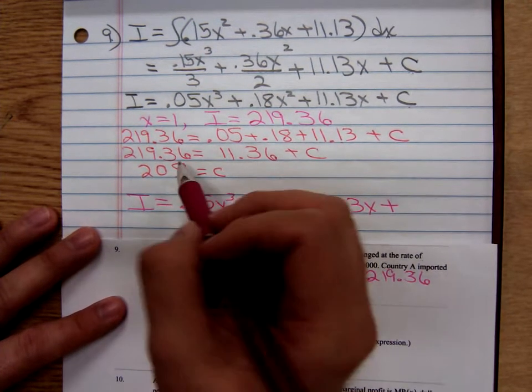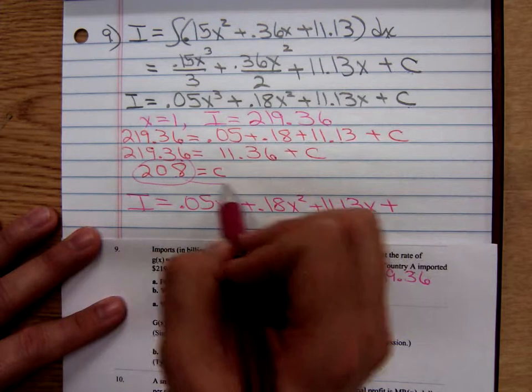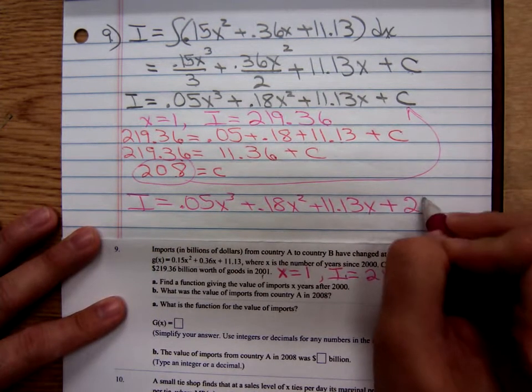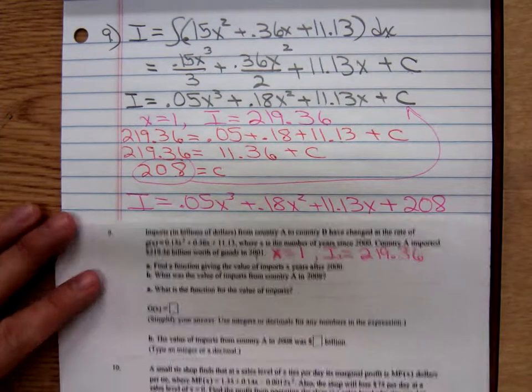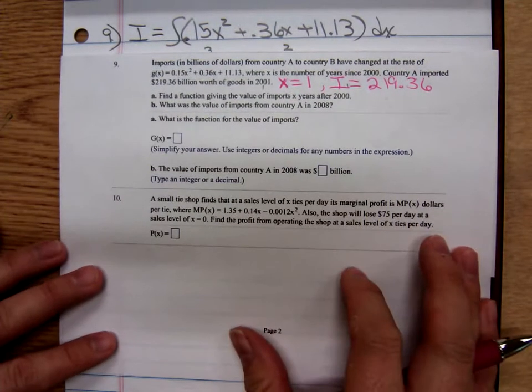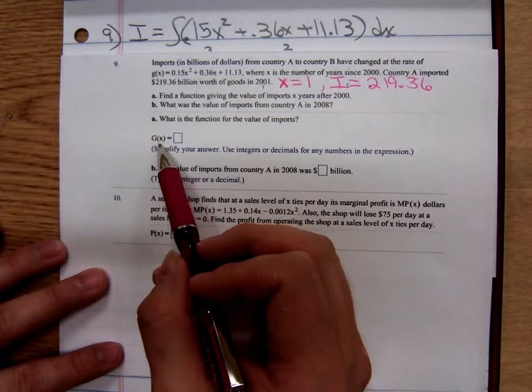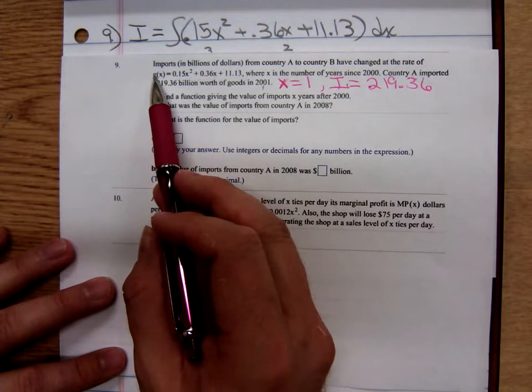So 208 is what we're going to plug in there for C. So in the statement of my problem here, they're calling it capital G since the derivative was lowercase g.